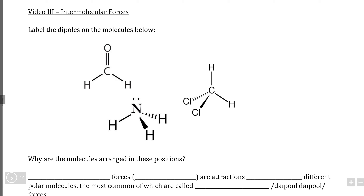If we start with the molecule in the top left, let's write out the electronegativities for hydrogen, carbon, and oxygen respectively. We can see that carbon's electronegativity of 2.6 is greater than hydrogen's electronegativity of 2.2, which means that the electrons in the bonds between carbon and hydrogen are going to be pulled towards carbon, so we can draw in the dipole vectors showing the movement of electrons towards carbon.